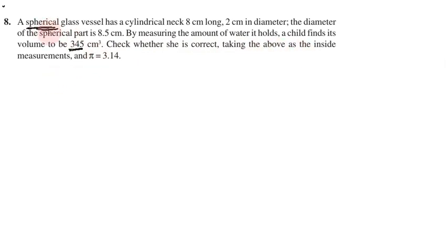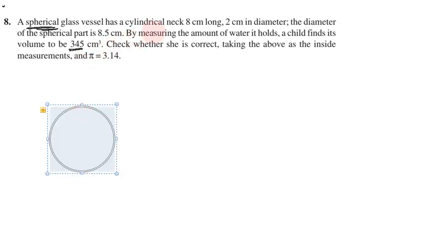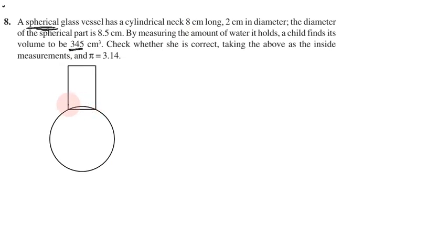The spherical glass vessel is sphere-shaped, and it also has a cylindrical neck, which is a cylindrical shape. The cylindrical neck is 8 cm long and 2 cm in diameter, so the length is 8 cm and the diameter is 2 cm.